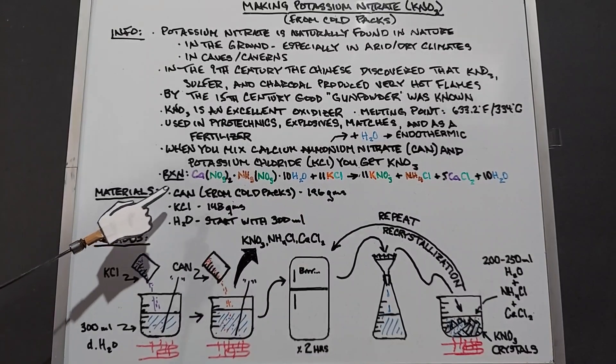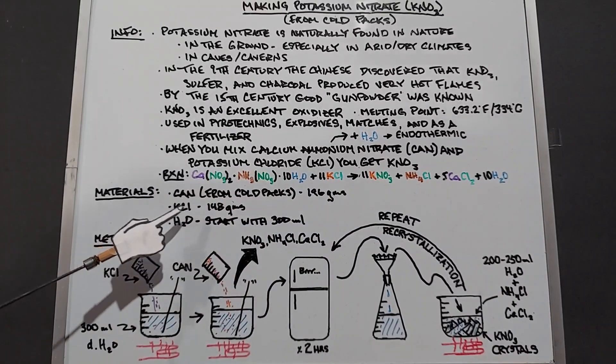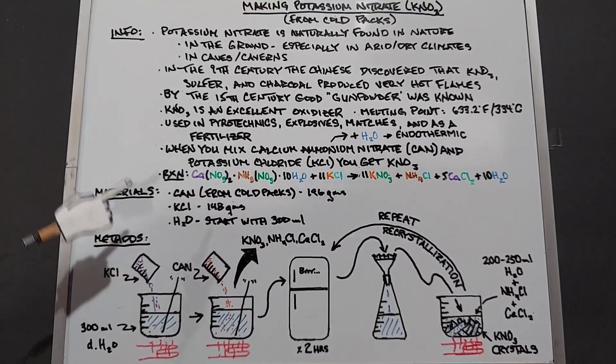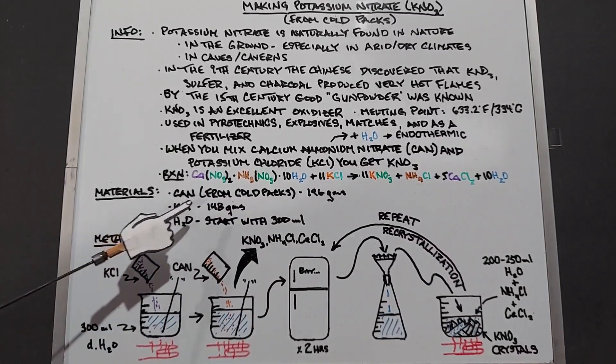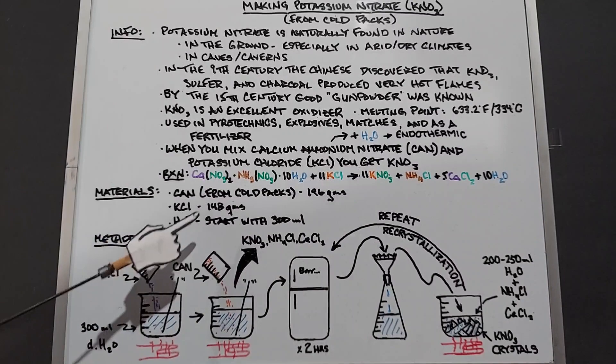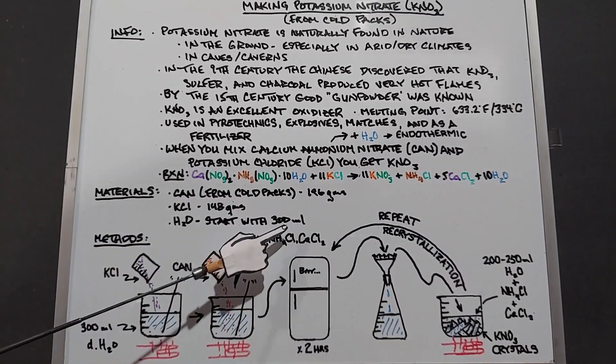For materials we need the calcium ammonia nitrate from the cold packs, 196 grams; potassium chloride, 148 grams. Now if you are using salt substitutes be careful because nowadays KCl is not sold by itself very often. It's often mixed with other things. And we need water. We'll start with 300 milliliters but we will reduce that amount as we go along.